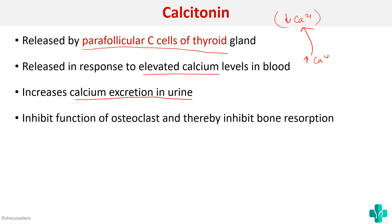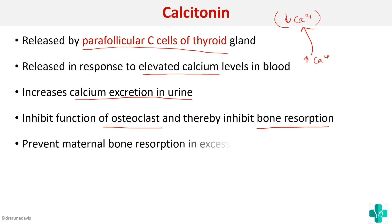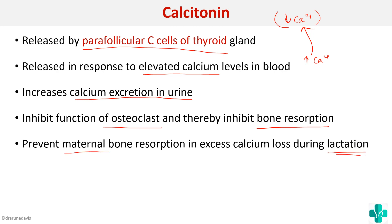Calcitonin also inhibits the function of osteoclasts, thereby inhibiting bone resorption — essentially the opposite of the actions of parathormone and vitamin D. It also prevents maternal bone resorption and excess calcium loss during lactation, ensuring there is no excessive maternal bone resorption during the lactation period.